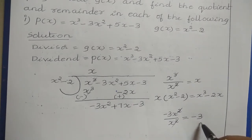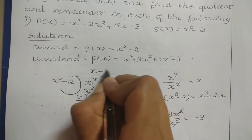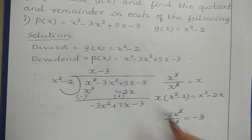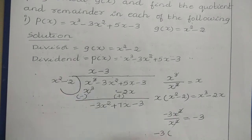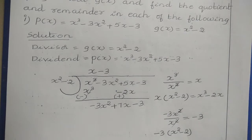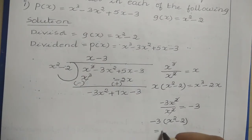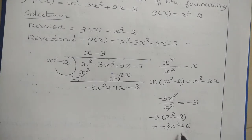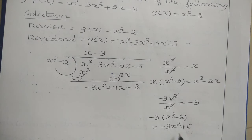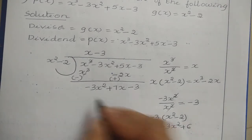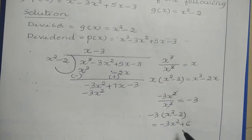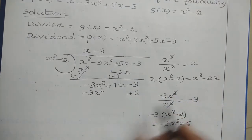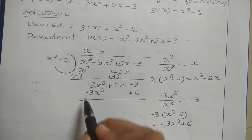Now multiply the second term of the quotient minus 3 by the divisor X squared minus 2. Minus 3 times X squared gives minus 3X squared, and minus 3 times minus 2 gives plus 6. Write minus 3X squared under the minus 3X squared term, and write plus 6 under the constant term. Now perform the subtraction.